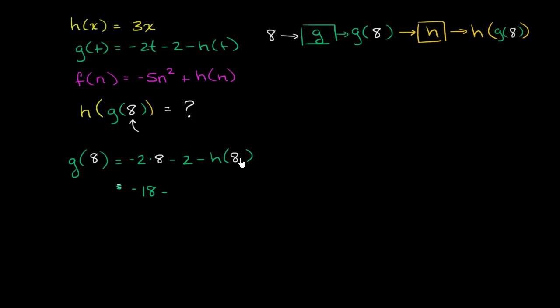So h of 8. Now we go to the definition of h. We need to calculate h of 8. So h of 8 is just going to be, well, every time we see an x, we replace it with an 8. It's going to be 3 times 8, which is equal to 24.